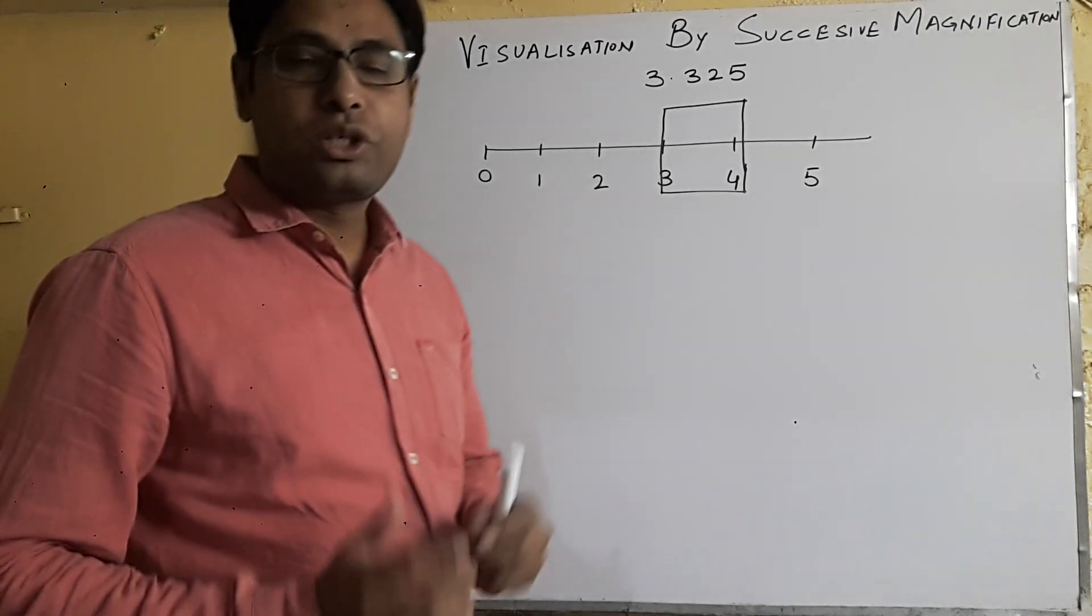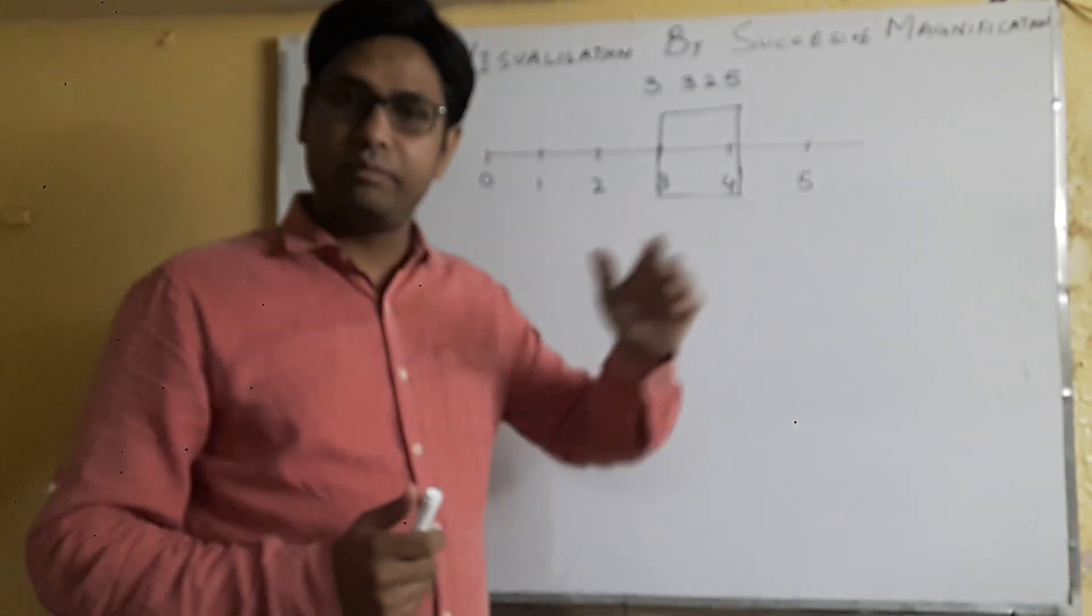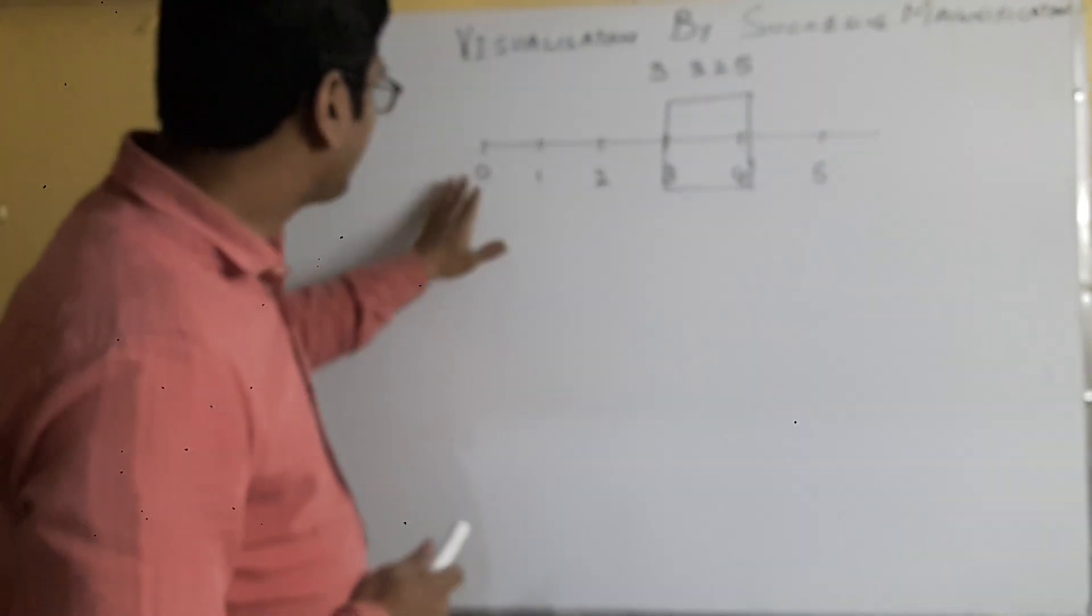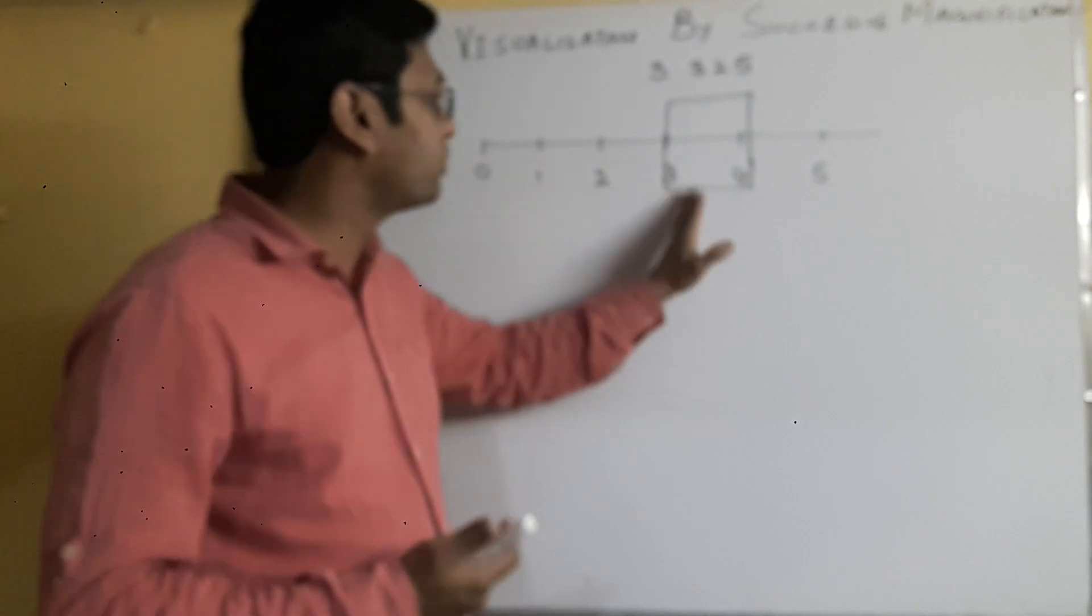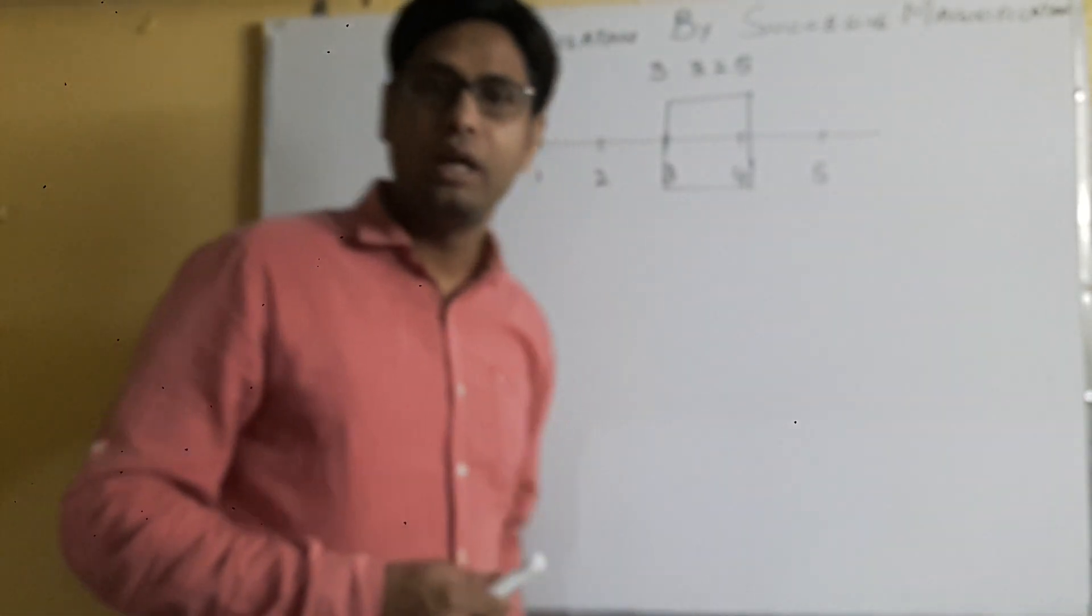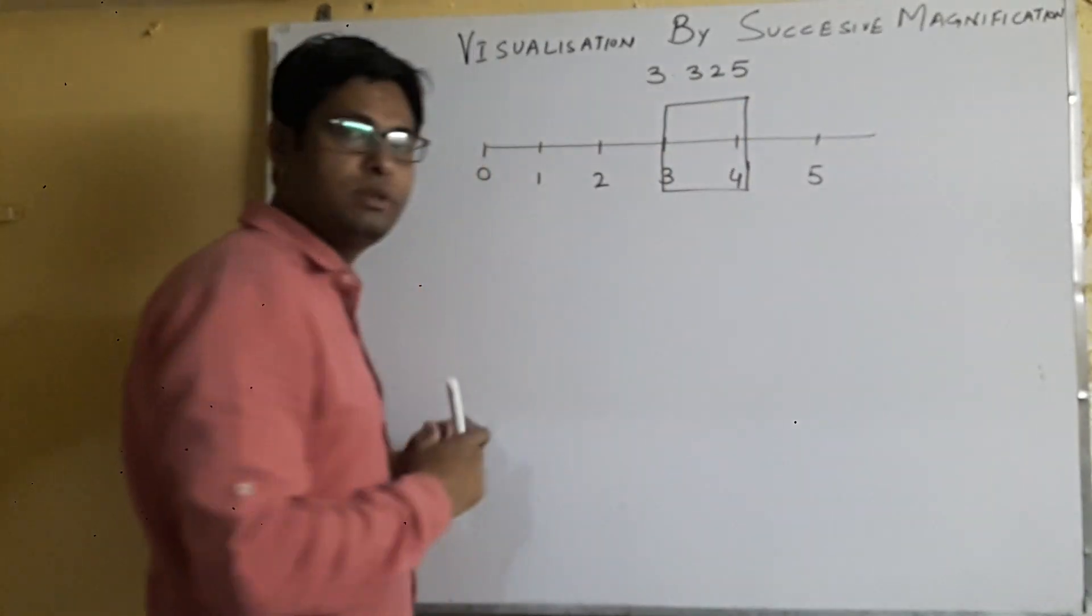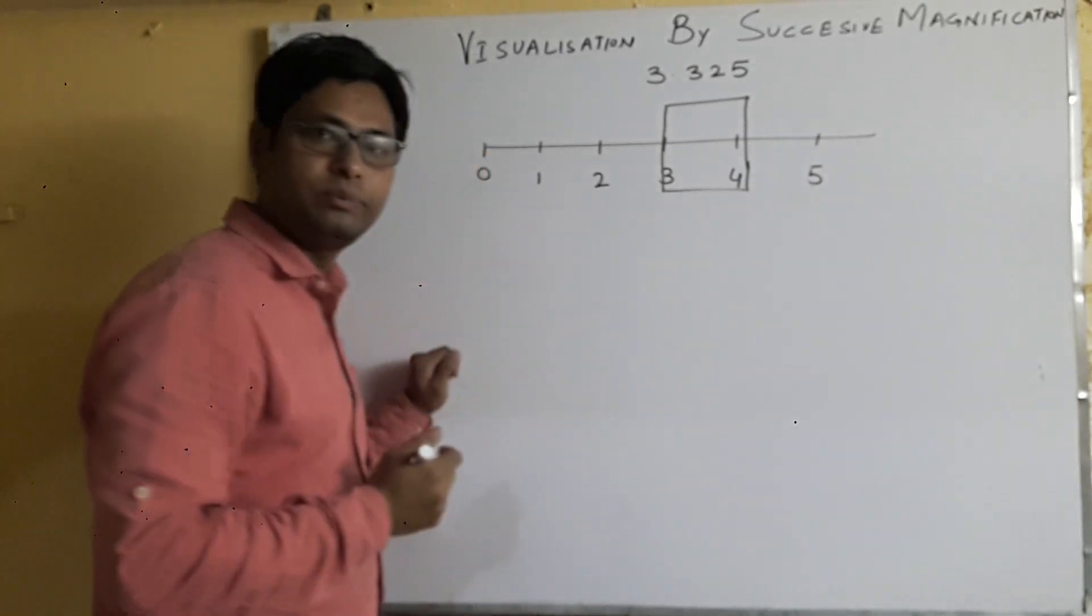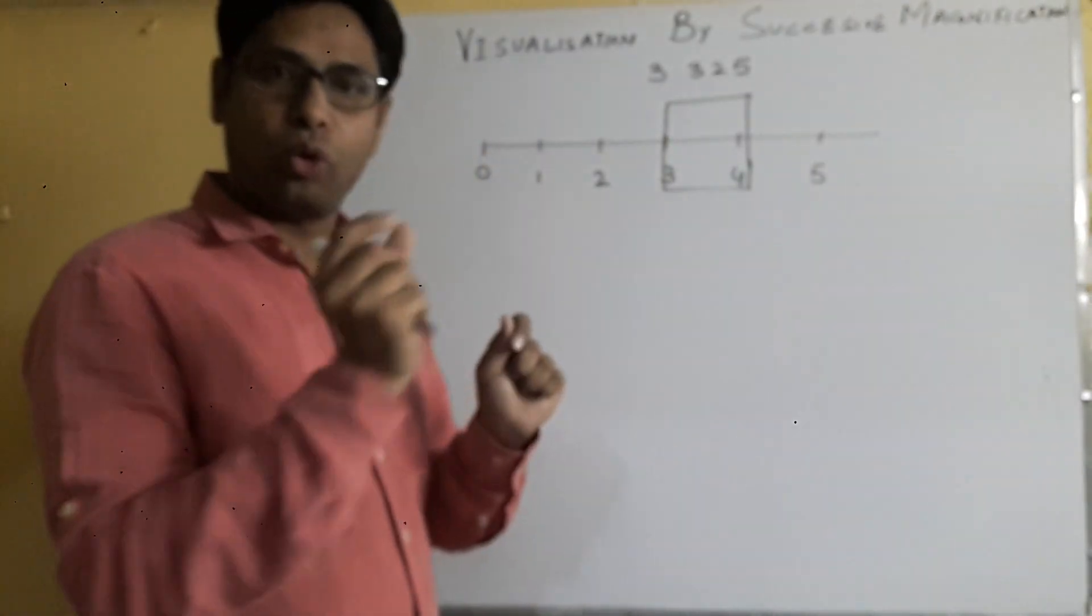So students, we are going to do the zooming method, the successive magnification method. Now we will draw a number line - it's a simple number line: 0, 1, 2, 3, 4, 5, and so on. Now we will see that 3.325 will definitely lie between 3 and 4.